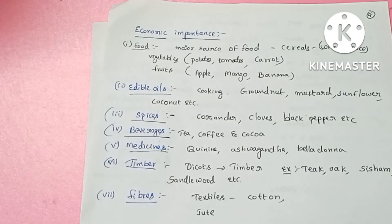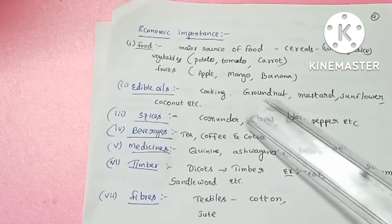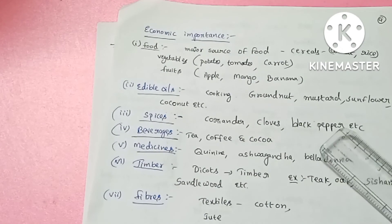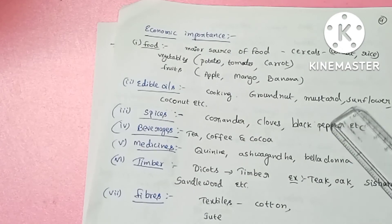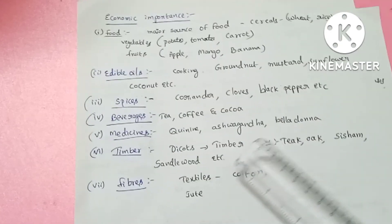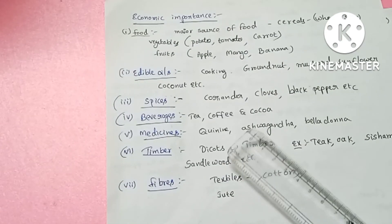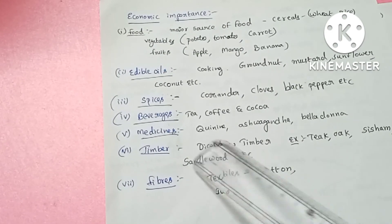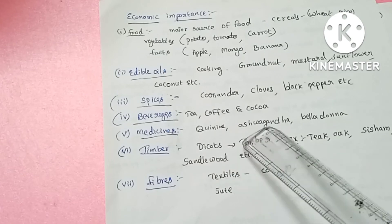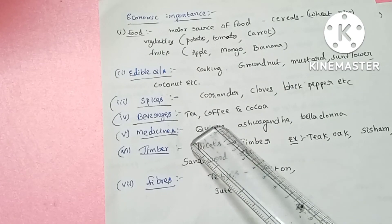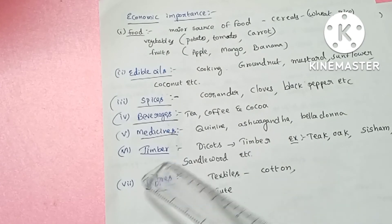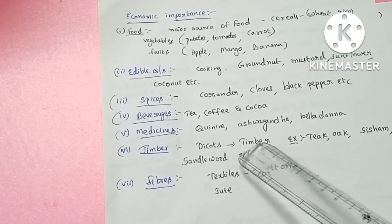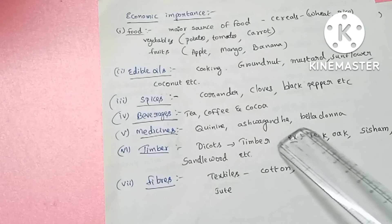We use spices from angiosperms such as coriander, cloves, and black pepper. Beverages like tea, coffee, and cocoa also come from angiosperms. Medicines such as quinine, ashwagandha, and belladonna are derived from angiosperms.